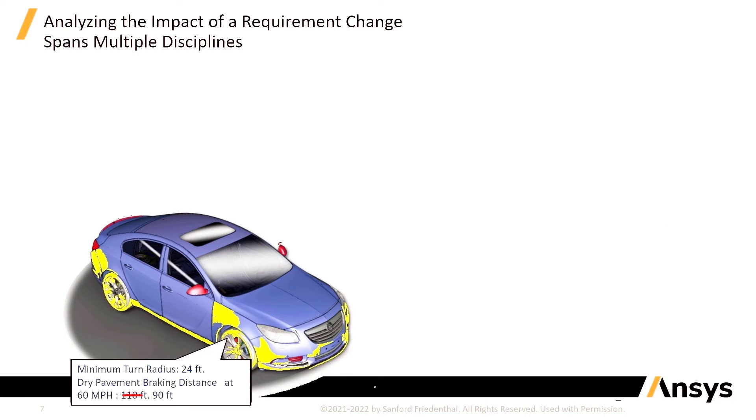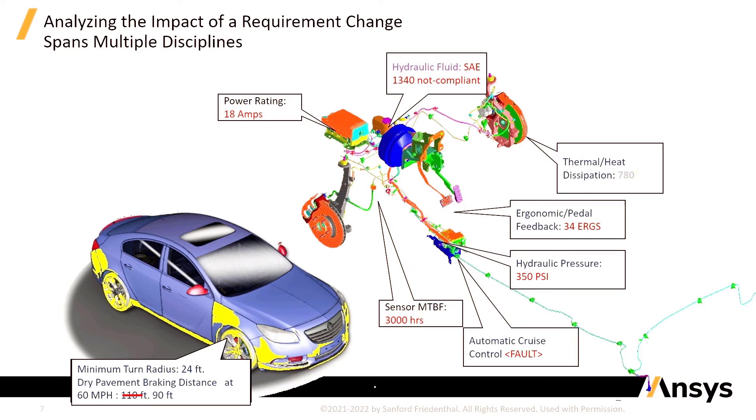First we look and we see these yellow highlighted areas. These are all potential parts of the car that may be impacted. As you drill down, you look at this braking system and you see the wheels and other parts of the braking subsystem. Many different aspects are potentially impacted by this seemingly innocuous change in a requirement.